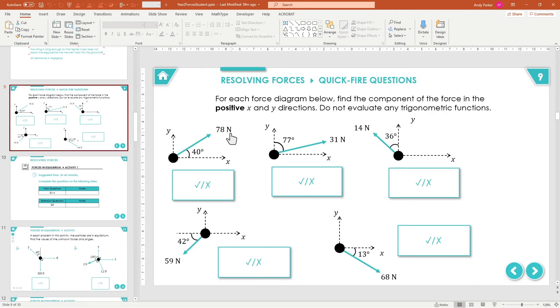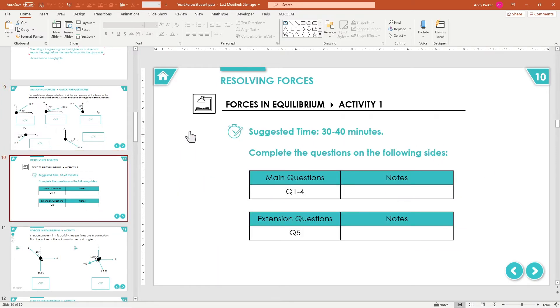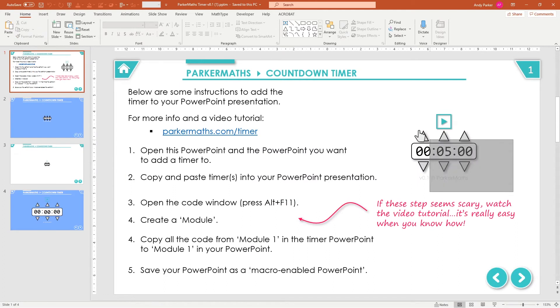So I'm going to add the timer to two slides. I've got a set of questions on this slide and then a set of further questions on the next slide. So the first thing I need to do is drag a box around this timer and copy it.